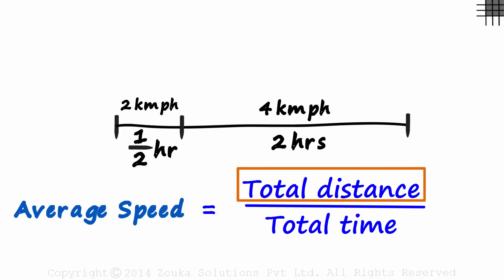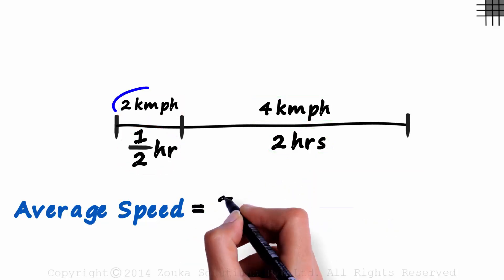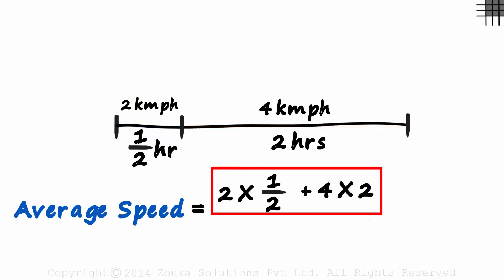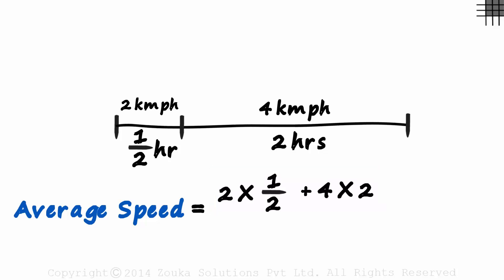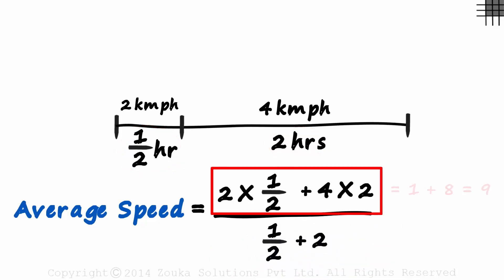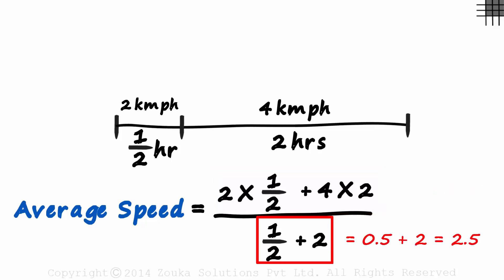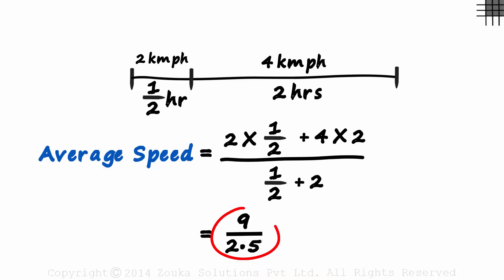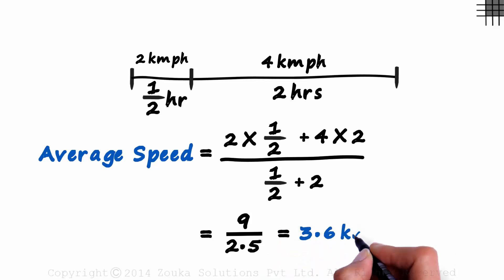Do we have the total distance? No, but we can find it — it will be the sum of the two distances. The product of speed and time gives distance: 2 multiplied by one half gives the first distance, and 4 times 2 gives the second. This sum gives the total distance. The total time equals one half plus 2. So the numerator is 1 plus 8, which is 9, and the denominator is 0.5 plus 2, which is 2.5. We get 9 over 2.5. Multiplying numerator and denominator by 4 gives 36 over 10, which equals 3.6 kilometers per hour.